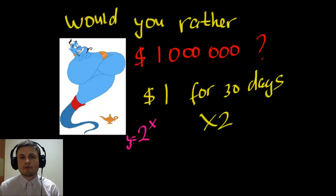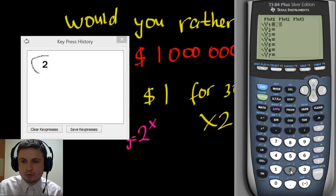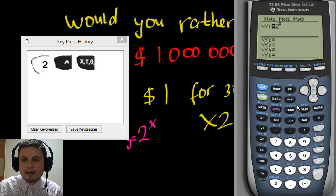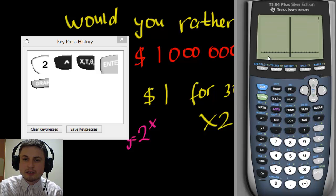So first, we need to enter our function: y equals two to the power of x. Go into the Y= screen — the button right next to the green Alpha button — press enter, and then look at the graph. I forgot to change the window, but this will at least show you what the graph looks like.